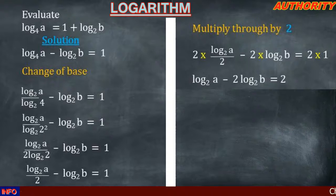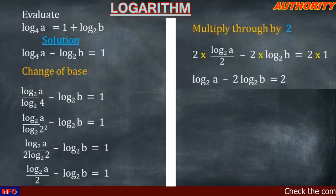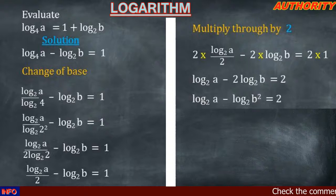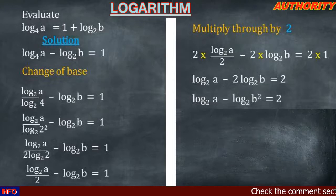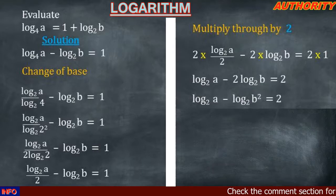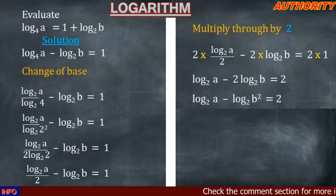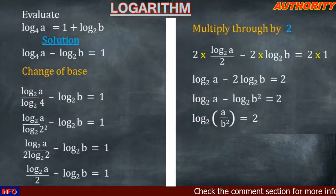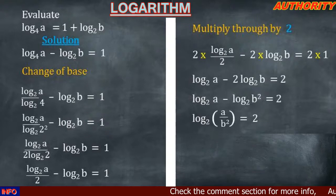We have log a base 2 minus 2 log b base 2. The coefficient 2 moves to the front of log b, becoming the exponent of b, giving log b squared base 2. So we have log a base 2 minus log b² base 2 equal to 2. Since we have the same base and a minus operation, we apply the quotient rule, giving log base 2 of (a over b²) equal to 2.